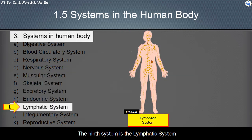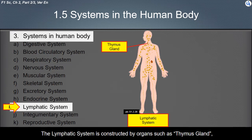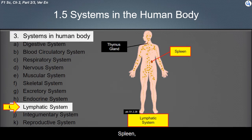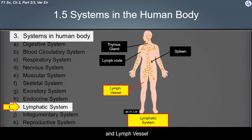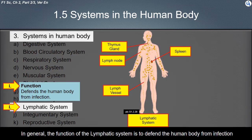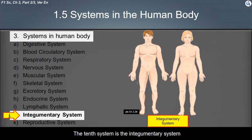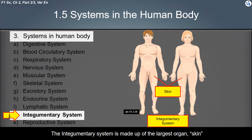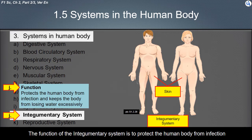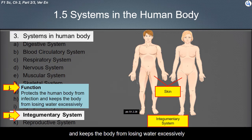The ninth system is the lymphatic system, which is distributed throughout the whole body. It is constructed by organs such as the thymus gland, spleen, lymph node, and lymph vessel. The function of the lymphatic system is to defend the human body from infection. The tenth system is the integumentary system, made up of the largest organ — skin. The function of the integumentary system is to protect the human body from infection and to prevent the body from losing water excessively.